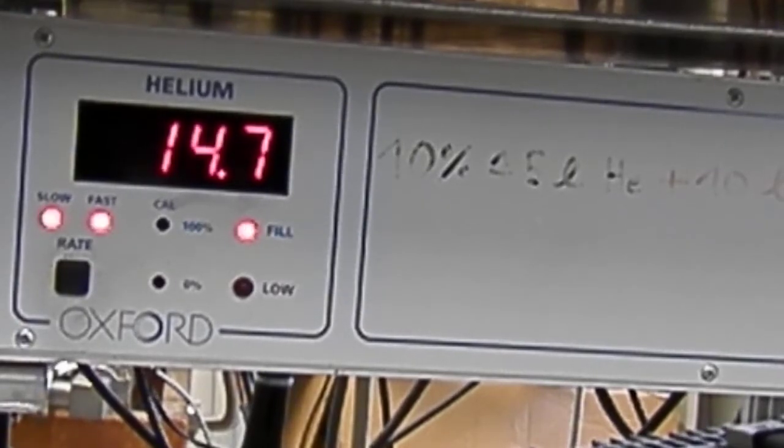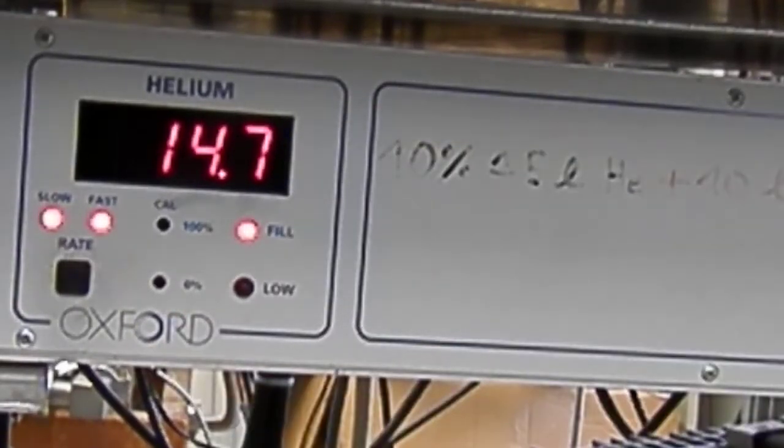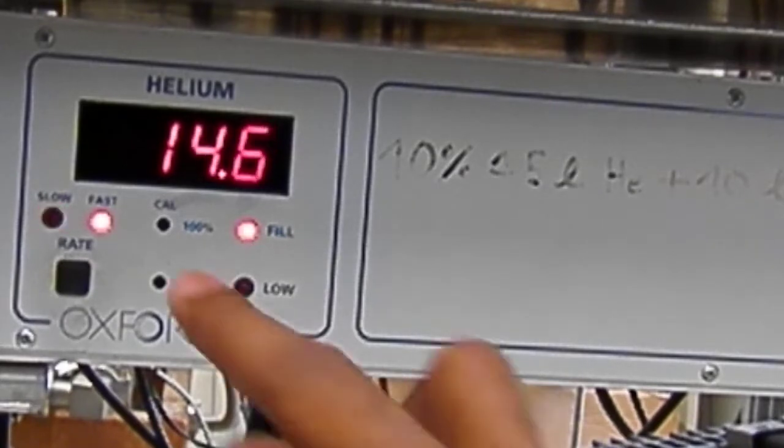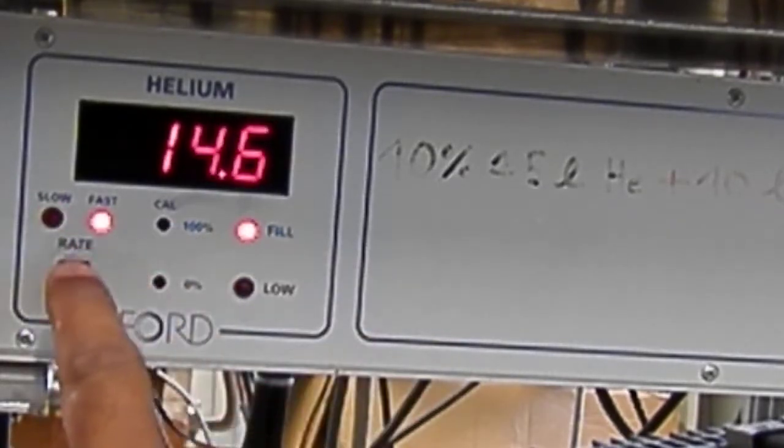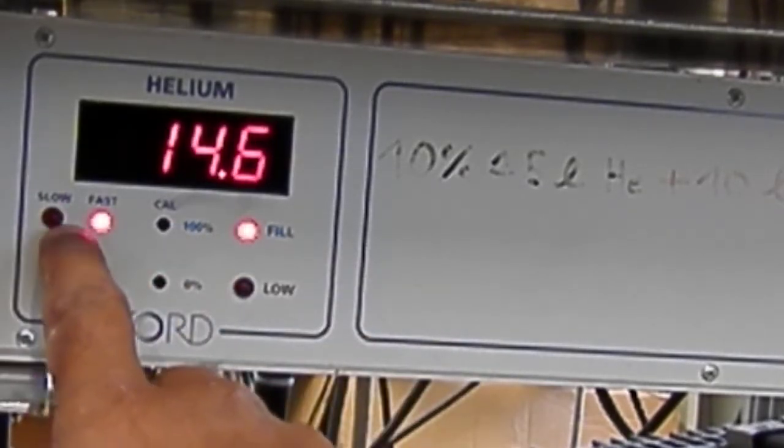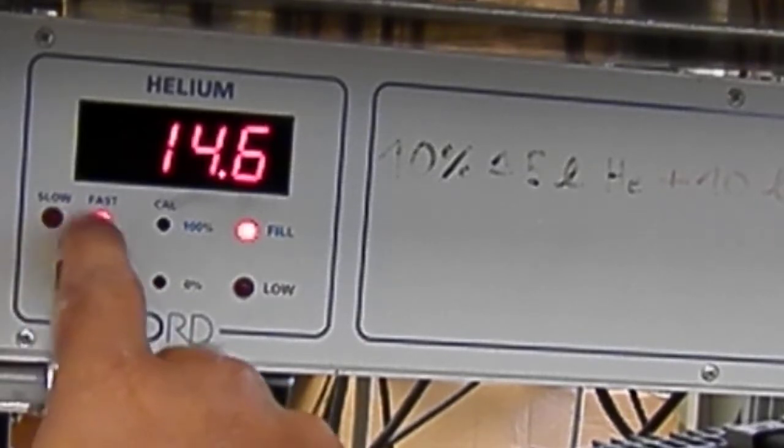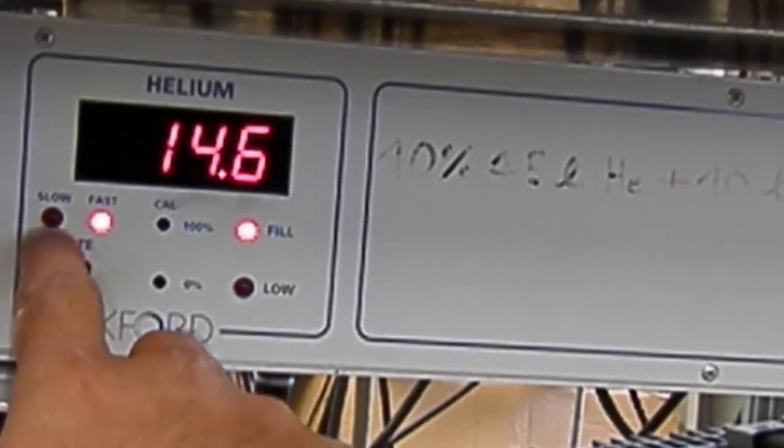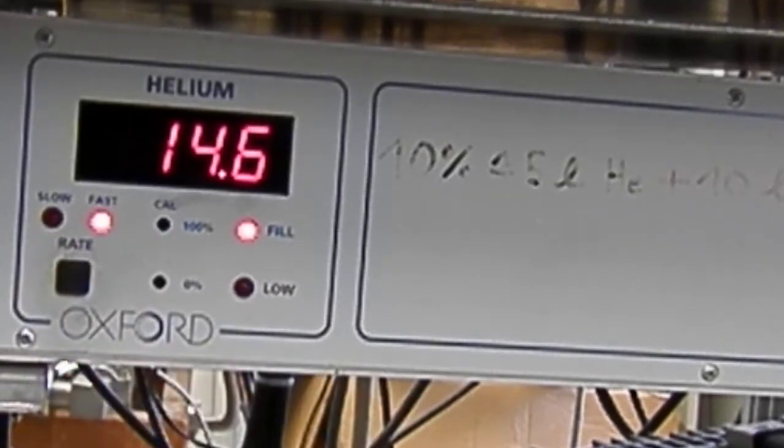When you fill the helium, it is recommended that you see the two LED switches. One LED is glowing now - this is the slow mode. There is a slow mode and a fast mode, and you have to switch to fast mode.